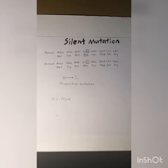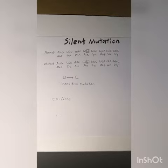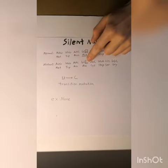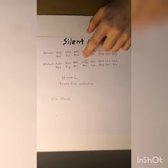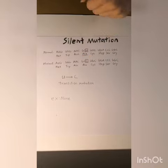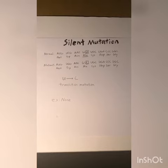This transition mutation here shows a silent mutation. A silent mutation does not change the outcome of the sequence. Here, a U becomes a C, but both of these codons code for Ala, so the entire sequence stays the same and nothing changes.